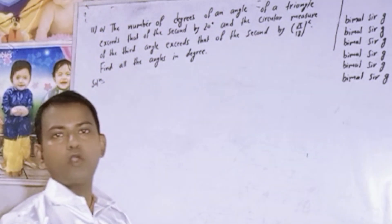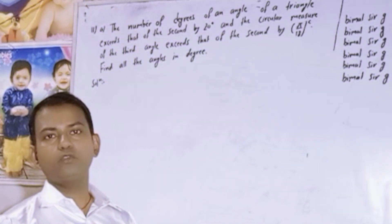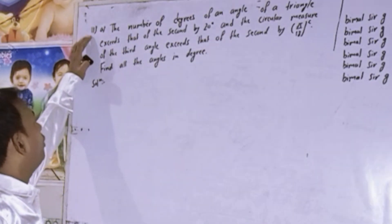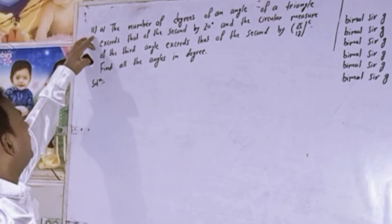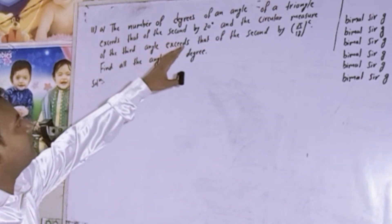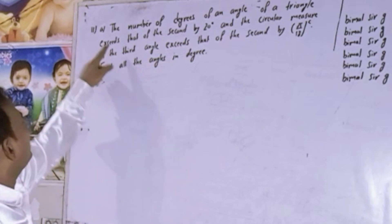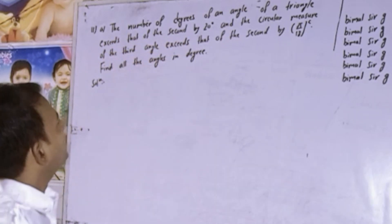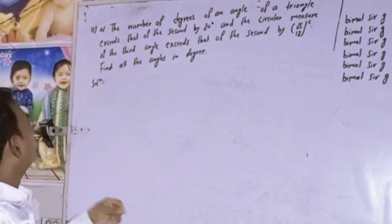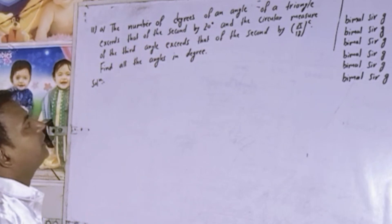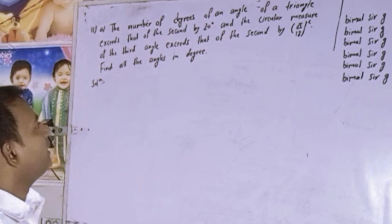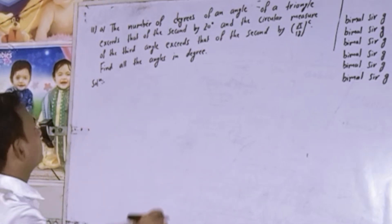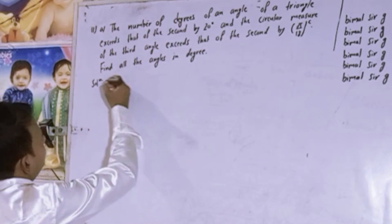Hi everybody, welcome back to Dimal Surge YouTube channel. Now I am going to solve OPT Maths 11a. The number of degrees of an angle of a triangle exceeds that of the second angle by 20 degrees, and the circular measure of the third angle exceeds that of the second by π/18 radian. Find all the angles in degrees. So now here is the solution.